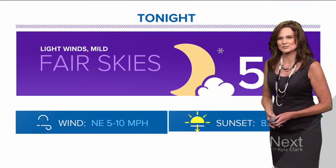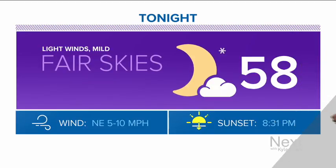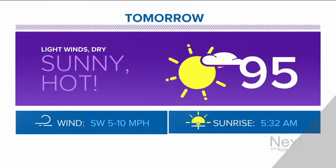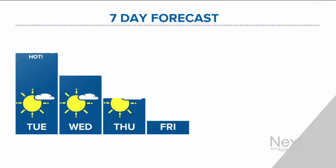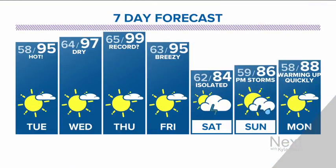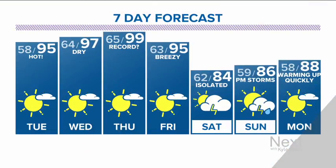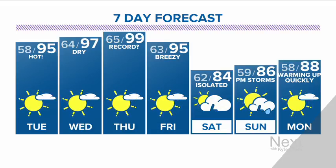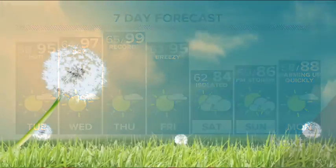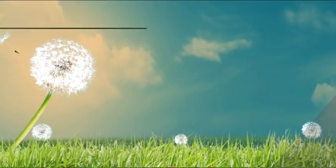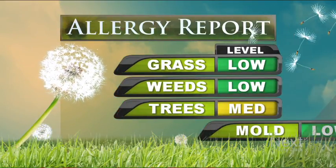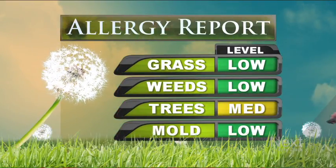Temperatures tonight will be close to 60 in the city, which is where we start tomorrow morning, but our high will be 95. The middle of the week, a record high is possible — could see 100 degrees on Thursday; the record is 99. A little cooler for the weekend with a better chance of rain from storms on Sunday. And right now, if you're having issues with allergies, it looks as though trees are the worst culprit.